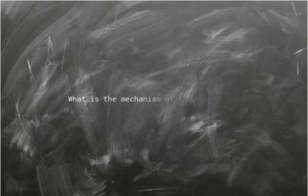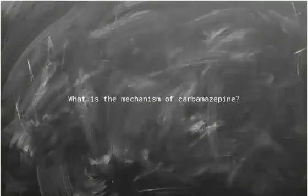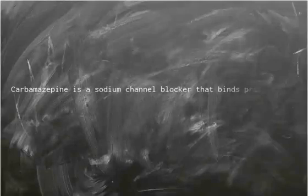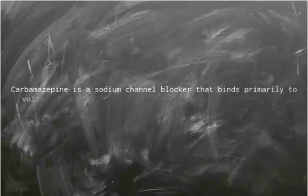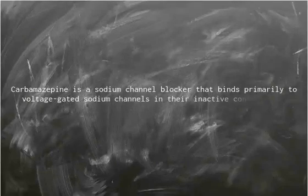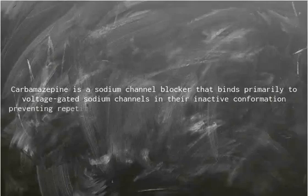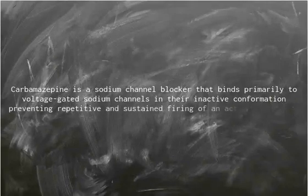What is the mechanism of carbamazepine? Carbamazepine is a sodium channel blocker that binds primarily to voltage-gated sodium channels in their inactive conformation, preventing repetitive and sustained firing of an action potential.